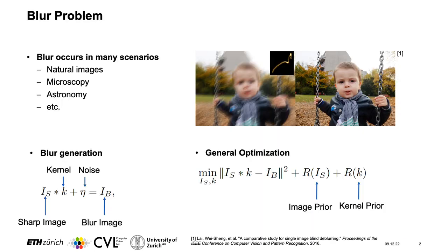Blur occurs in many scenarios such as natural images, microscopy, and astronomy. To the right you see an example of blur and the corresponding blur kernel. Blur generation can be formalized as a sharp image that is convolved with a kernel plus noise, and this equals the blurred image. In general we only have the blurred image, and thus we need to recover the sharp image and the kernel.